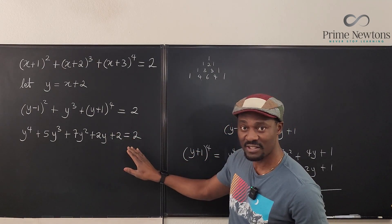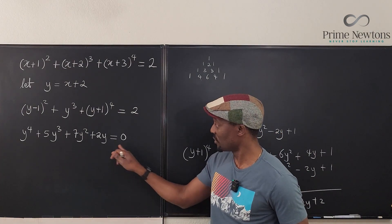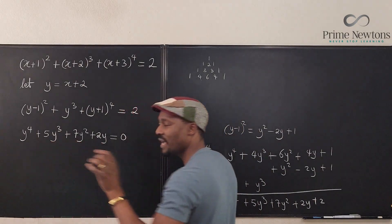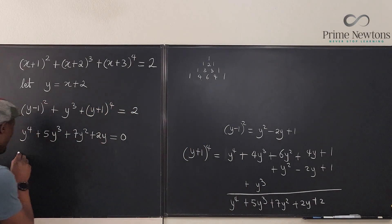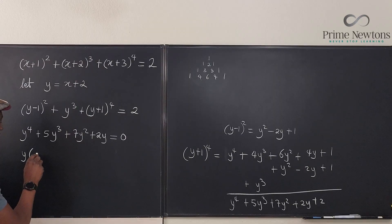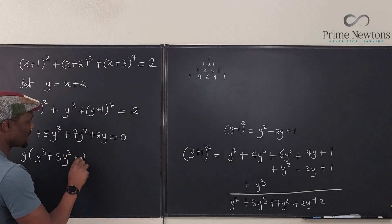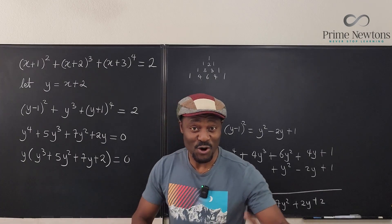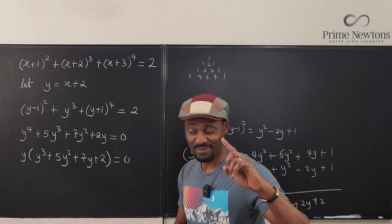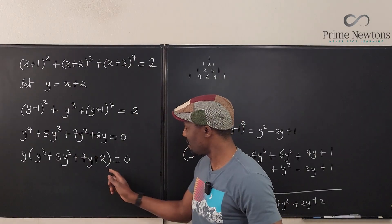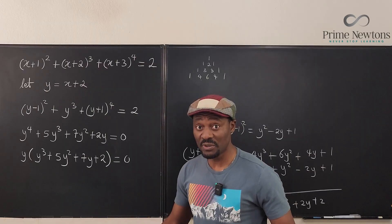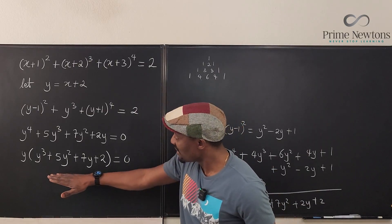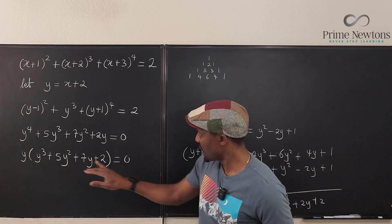So now our equation is equal to zero: Y⁴ + 5Y³ + 7Y² + 2Y = 0. Every term here has a Y, so I can factor it out. That gives us: Y times (Y³ + 5Y² + 7Y + 2) = 0. By the zero product property, when the product of two things is zero, one of them must be zero. So Y equals zero is one solution, and the cubic Y³ + 5Y² + 7Y + 2 = 0 must also be solved.